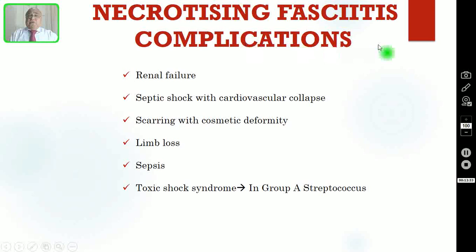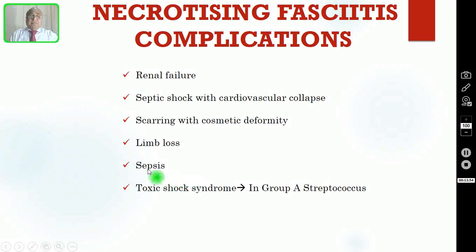Coming to the complications: the patient can develop renal failure, septic shock with cardiovascular collapse, scarring with cosmetic deformity, and limb loss — if the whole limb is gangrenous, amputation is required. Sometimes it will end in sepsis, septic shock, or even multi-organ failure. Another complication is toxic shock syndrome, which is more common in Group A streptococcus (Type 2) infection.